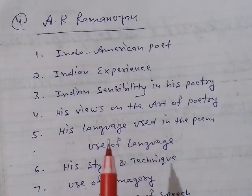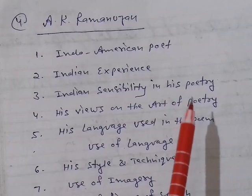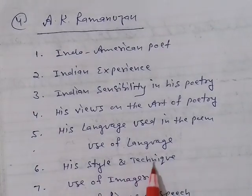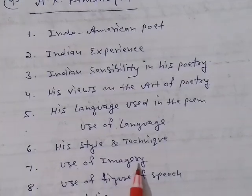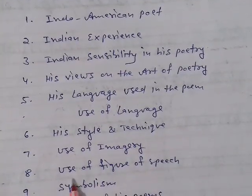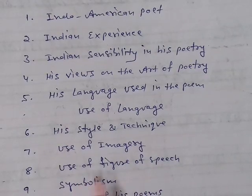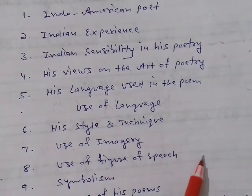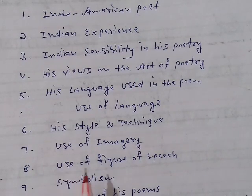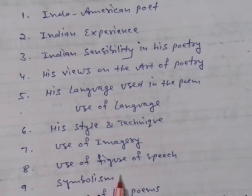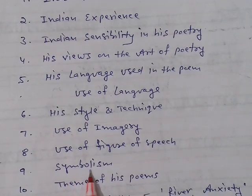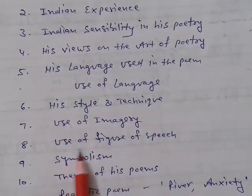Quotations are very, very important to support your headings. The sixth point is his style and technique — use of imagery, use of figures of speech. Most poets preferred to use simile and metaphor. You can quote a few lines if you remember them, and I suggest always trying to learn one or two lines from all the poems. Then there is symbolism — there is plenty of symbolism in his poem 'An Anxiety,' with a lot of symbols. This point is also very important.